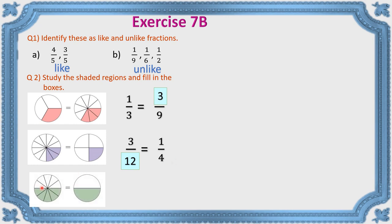Next, the numerator is missing and the denominator is already given. The figure shows one-half, and there are ten parts total, so the missing numerator is five. Five-tenths equals one-half — these are equivalent fractions.